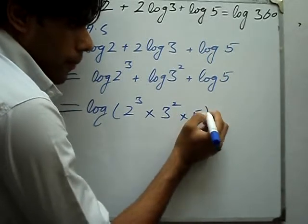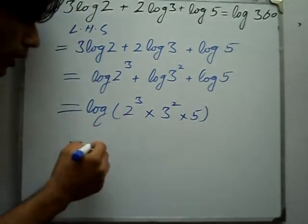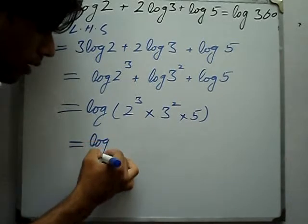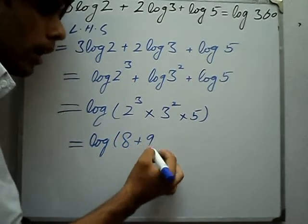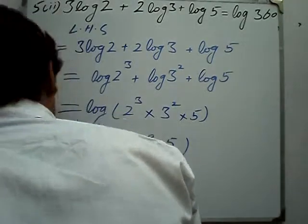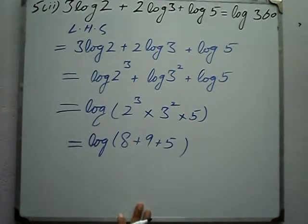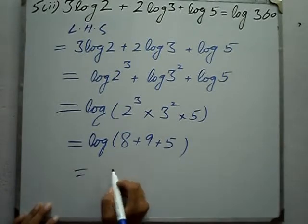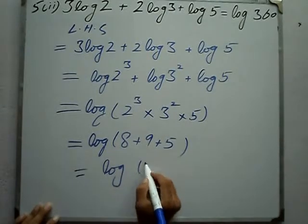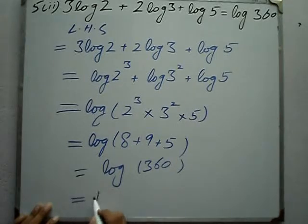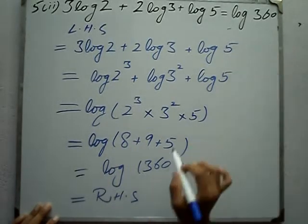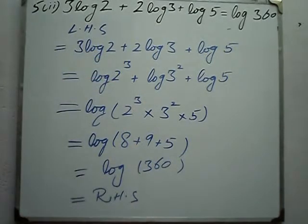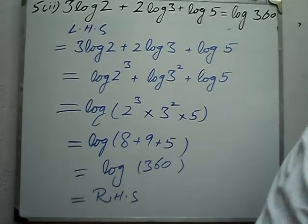Log of 2 cubed times 3 squared times 5 equals log 360, which equals the right hand side. Question complete.